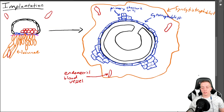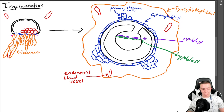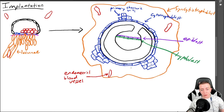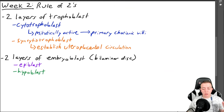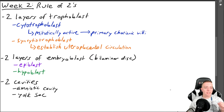Looking at our diagram, in the center we have the epiblast in purple and the hypoblast in green. These two layers — not anything else, I know there's a lot going on in the picture — but the embryo is going to be the epiblast and the hypoblast only. Just these two layers for now; that's going to change in the next episode. These two will form the embryo.